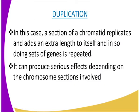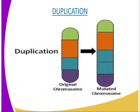The second type of chromosomal mutation is duplication. In this case, a section of a chromatid replicates and adds an extra length to itself, and in so doing, a set of genes is repeated. Duplication can produce serious effects depending on the chromosome sections involved. For instance, if the genes duplicated are responsible for certain traits, these traits may be overemphasized in the organism. From our diagrammatic representation, in the original chromosome a gene appeared only once, but after mutation it has duplicated — we now have two copies.